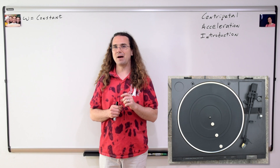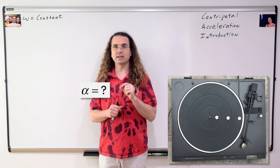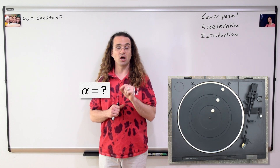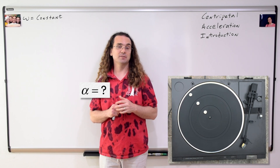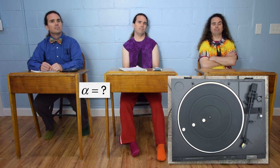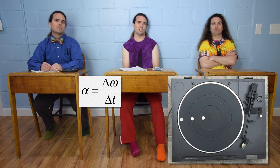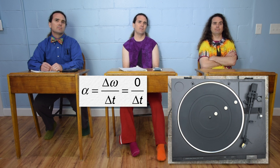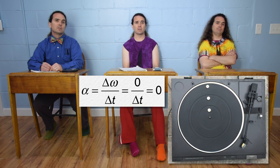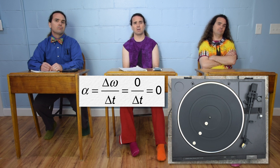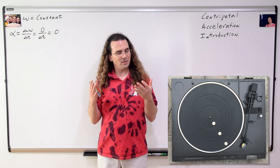Bobby, what do we know then about the angular acceleration of the mints? If the angular velocity of the mints is constant, then the change in angular velocity of the mints is zero, and the angular acceleration of the mints is zero. Exactly.